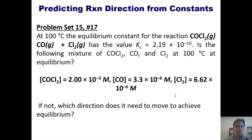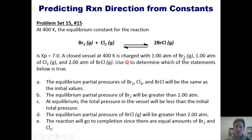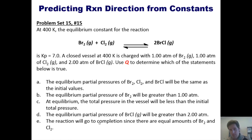Let's take a look at another problem. At 400 kelvins, the equilibrium constant for this reaction is KP equals 7 — that's an equilibrium constant with respect to pressure. A closed vessel at 400 K is charged with one atmosphere bromine, one atmosphere of chlorine, and two atmospheres of bromine chloride. Use Q to determine which of the following statements is true. I won't give you the answer right away, but I invite you to attempt it on your own. If you wish, you can click the link to a separate video where I work through it on the board.